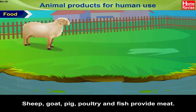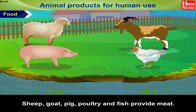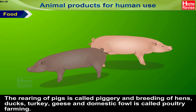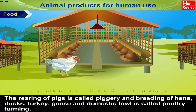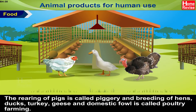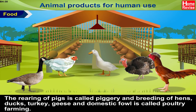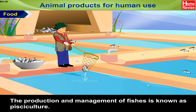Sheep, goat, pig, poultry, and fish provide meat. The rearing of pigs is called piggery, and breeding of hens, ducks, turkey, geese, and domestic fowl is called poultry farming. The production and management of fishes is known as pisciculture.